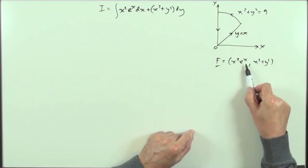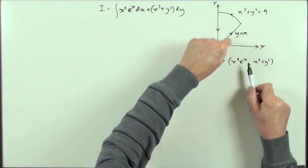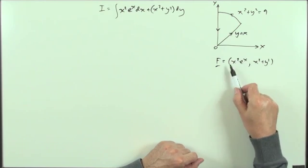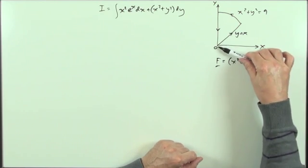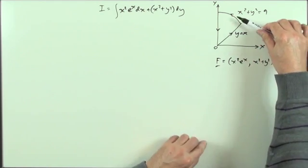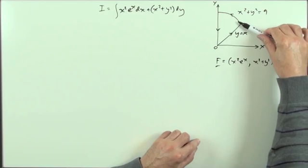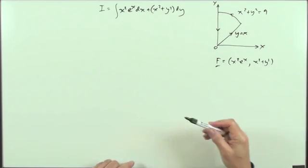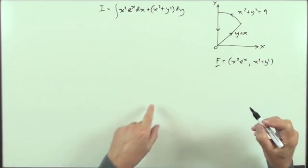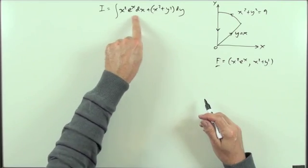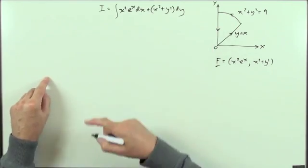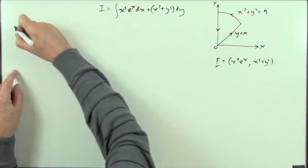If that had a y portion in it, then the values would have been different in the different parts, but as there's no y in the x-component, the values travelling along this part are exactly the same but in reverse of them travelling in that part. So that means when I come to work out this, I can ignore this part of it.